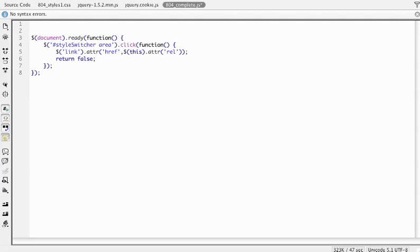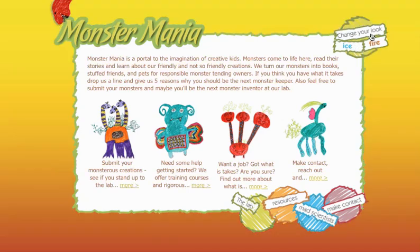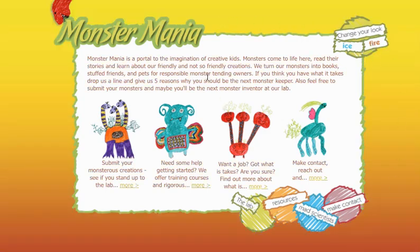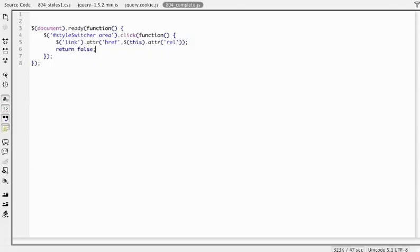So once again, we're using the jQuery selector, selecting any link, looking for an attribute on href, and passing the rel attribute of whatever is clicked. If we save this page and preview it in the browser, you can now see that when you click the links, the style of the page does change. If I click 'ice', we get the blue style — text is changed to blue, link color is blue. If we click 'fire', we get the new background color, text is red, link color is kind of an orange. And if we click 'change this look', it goes back to the default settings. We're actually switching out the style sheets in essentially three lines of jQuery.